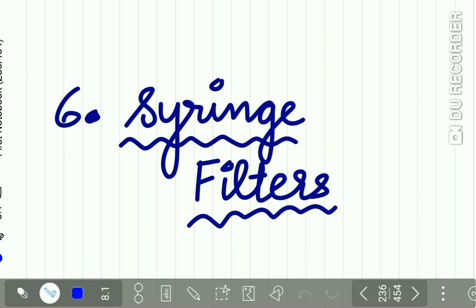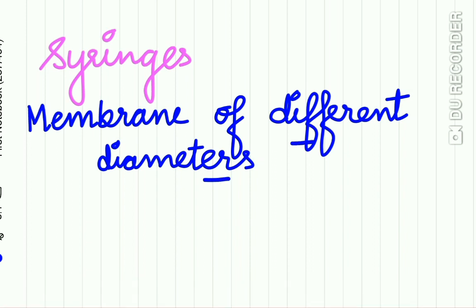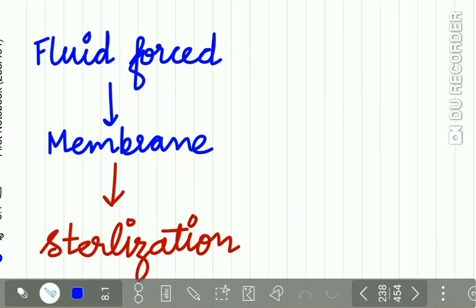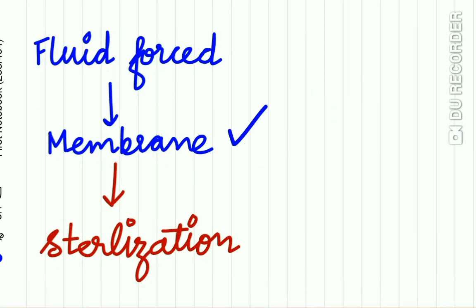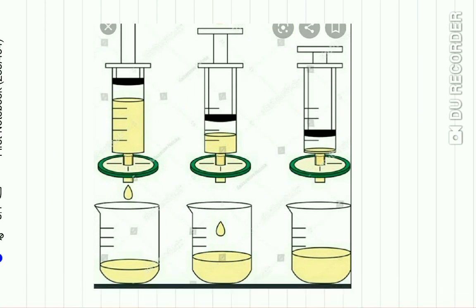The sixth type is the syringe filter. Syringes are fitted with membranes of different pore diameters. Fluid is forced through this membrane with the help of a syringe, and as the fluid passes through the pores of different sizes, sterilization of the fluid occurs.